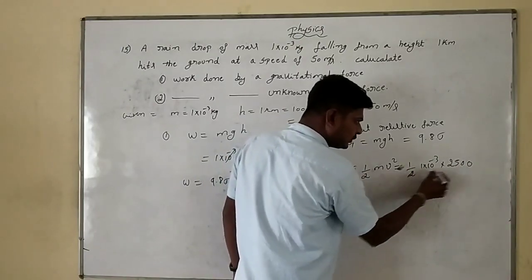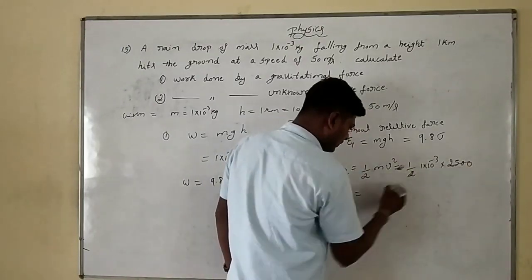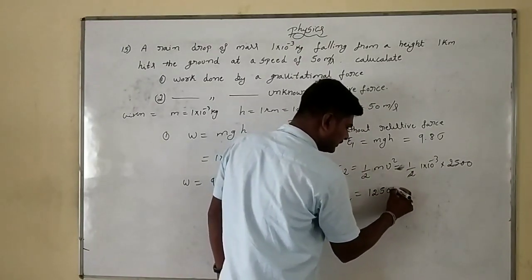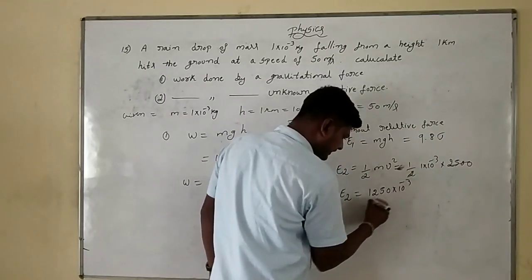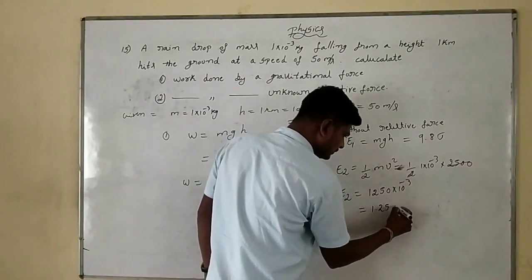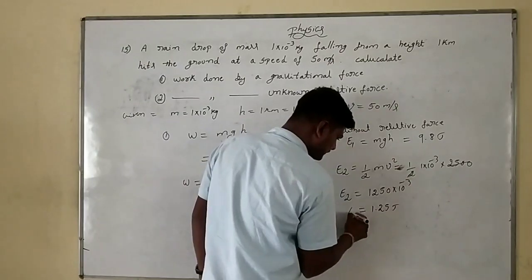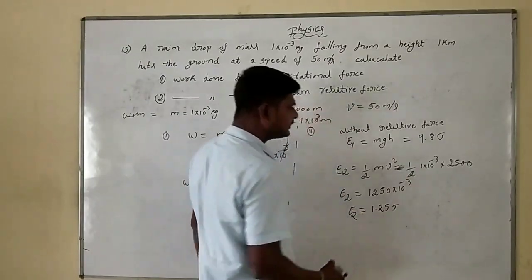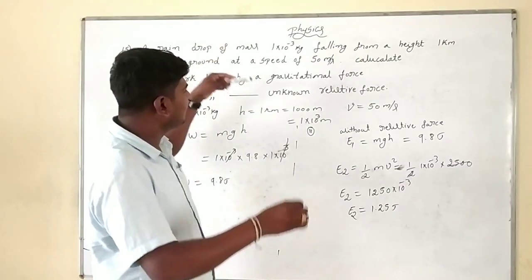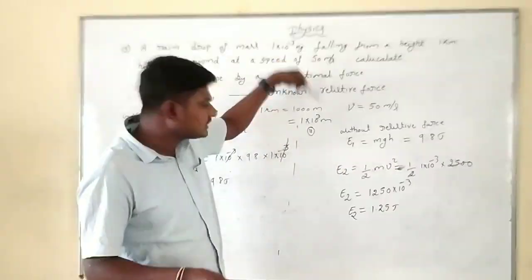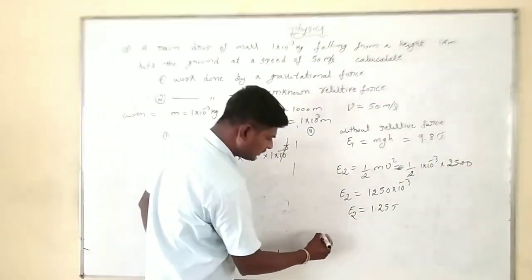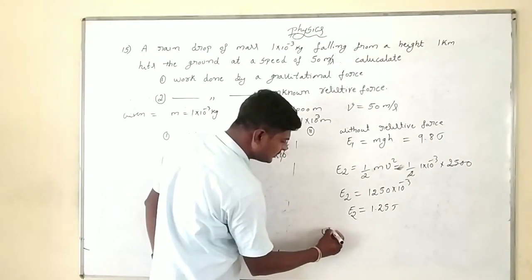2500 divided by 2 gives 1250, so kinetic energy E₂ equals 1250×10⁻³, which equals 1.25 joules. So E₂ is 1.25 joules.